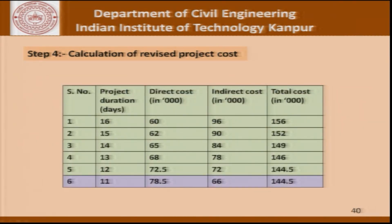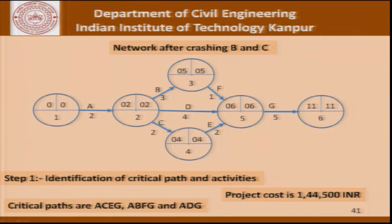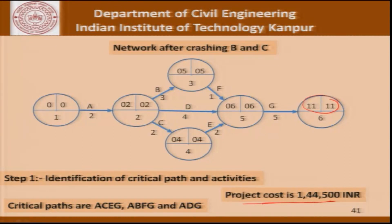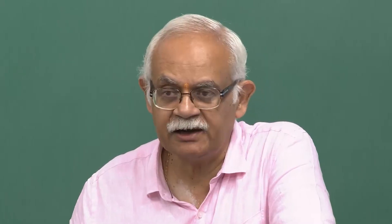We have reached a plateau at 144,500. Even though the cost hasn't changed, we have reduced the project duration by 1 day, so completing the project in 11 days at 144,500 is still a better option. Note that once the project duration is reduced to 11 days, D also becomes critical: 2+4+5=11, 2+3+1+5=11, 2+2+2+5=11. All activities are now critical with no float. We can complete the project in 11 days at a cost of 144,500.